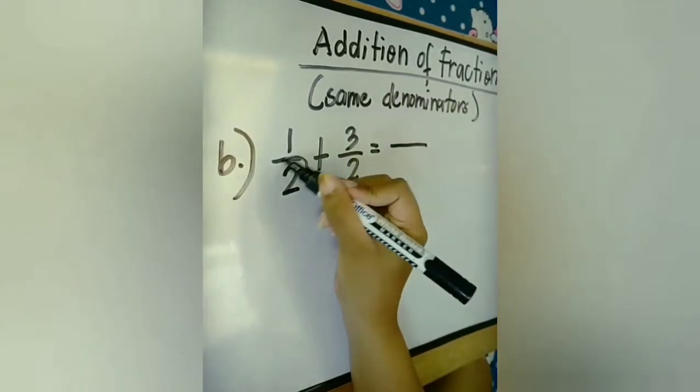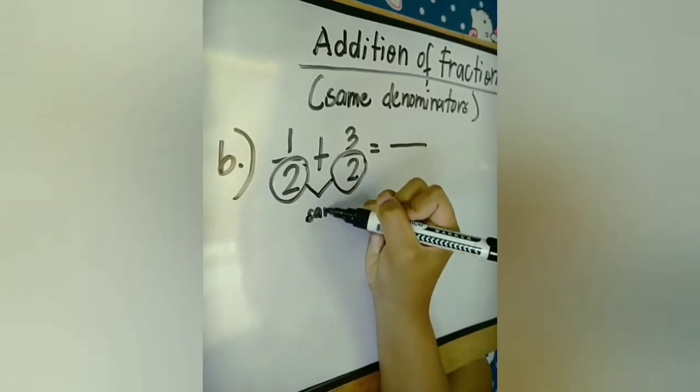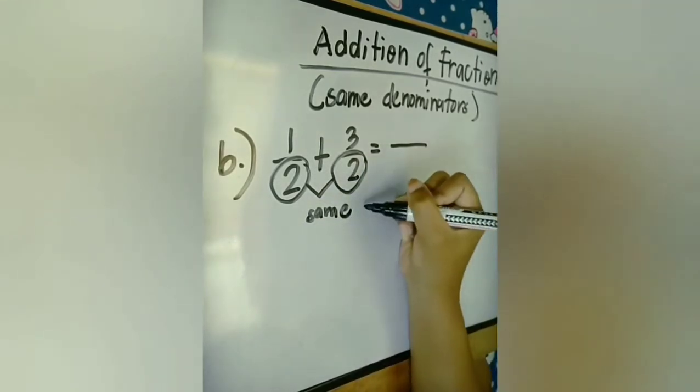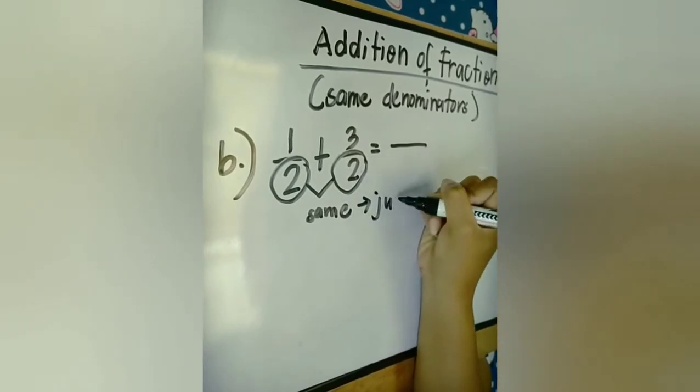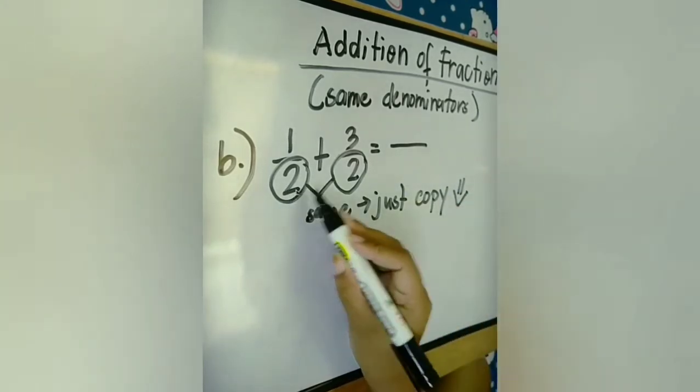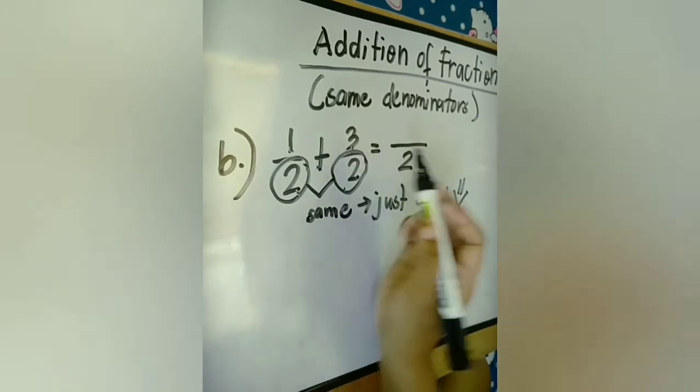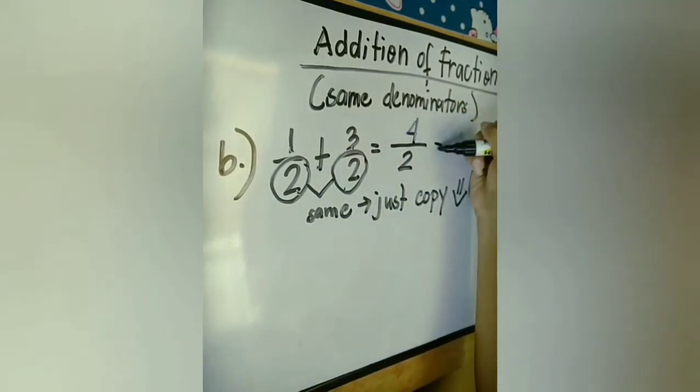So, 1 half plus 3 half is equal to, since the denominators are the same, which is 2, what we're gonna do is just copy. So, we will just copy the denominator, which is 2. And then add the numerator. 1 plus 3, the answer is 4. And then 4 divided by 2, the answer is 2.